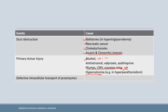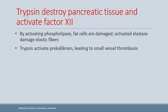Hypercalcemia is a cause — recall that paraneoplastic syndrome is more associated with hypercalcemia than hyperparathyroidism. Defective intracellular transport of enzymes may also cause pancreatitis. Trypsin, activated by enterokinase from the duodenum, activates phospholipase (causing fat necrosis) and elastase (damaging elastic fibers). High yield: trypsin also activates Factor XII, increasing small vessel thrombosis.